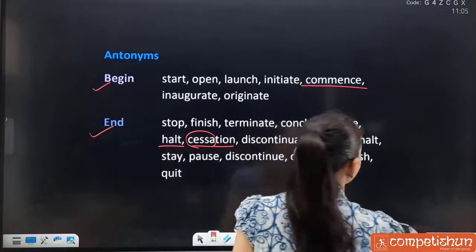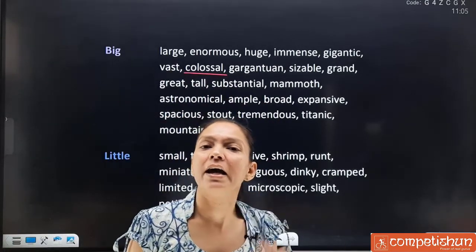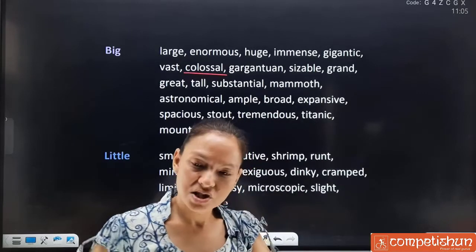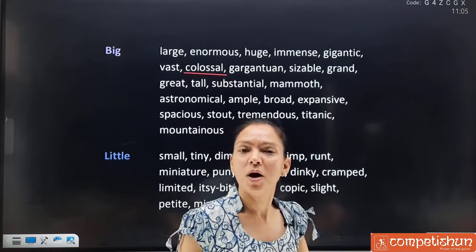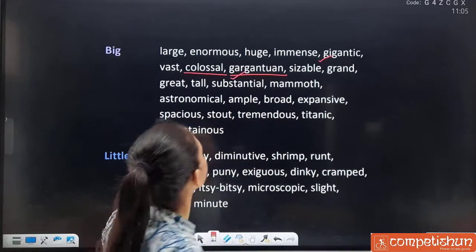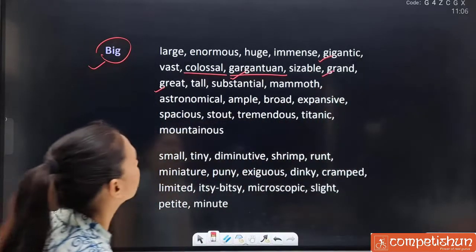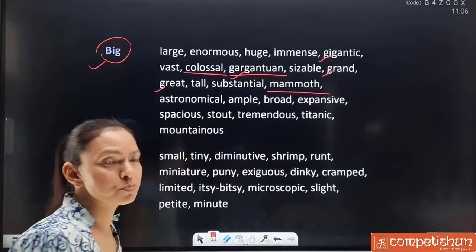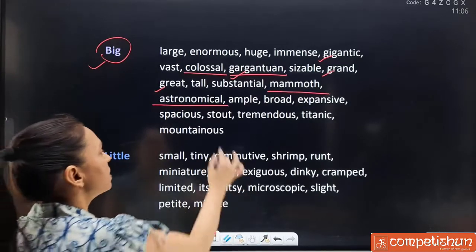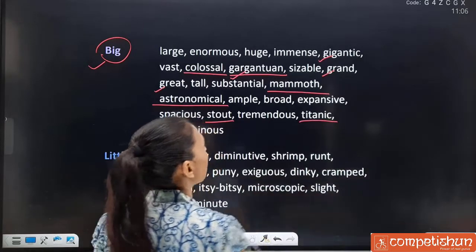Synonyms for 'big/large': enormous, huge, immense, gigantic, vast, colossal. Note the vocabulary in passages and writing — try to note these down as you progress through your classes, strengthening vocabulary simultaneously. New words: gargantuan (G-A-R-G-A-N-T-U-A-N) — both gigantic and gargantuan start with G. Also: sizable, grand, great — many words starting with G. Then: substantial, mammoth (like a mammoth elephant — vishal), astronomical, ample, broad, expansive, spacious, stout (for a big-bodied person), tremendous, titanic (Titanic was a very large ship — giving the sense of big) and mountainous.